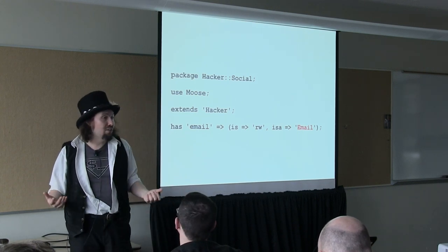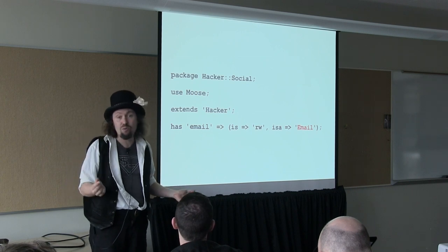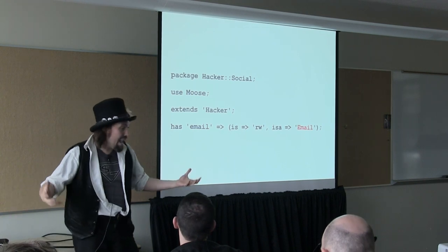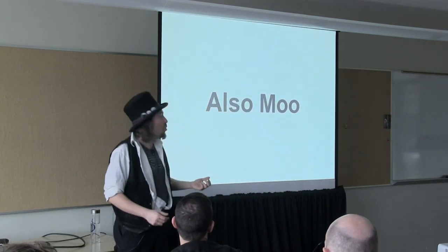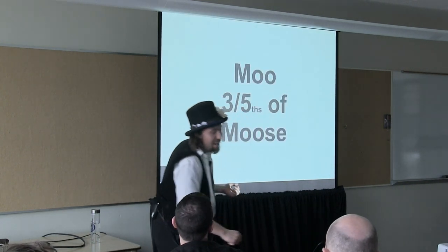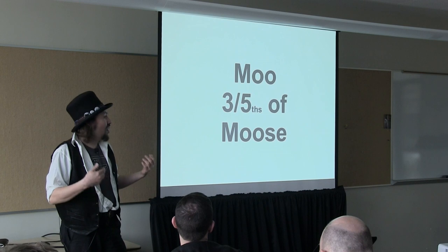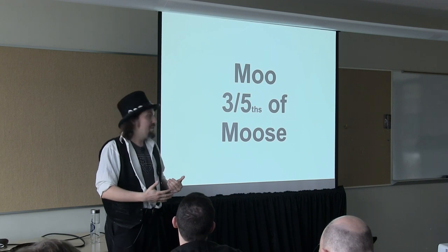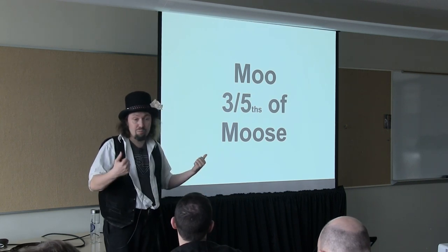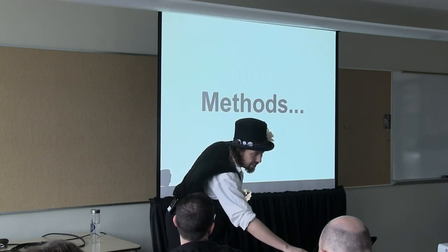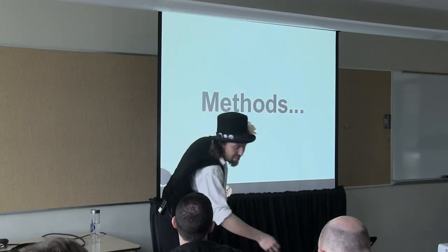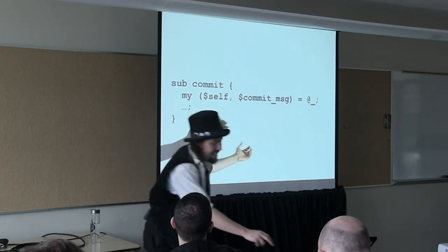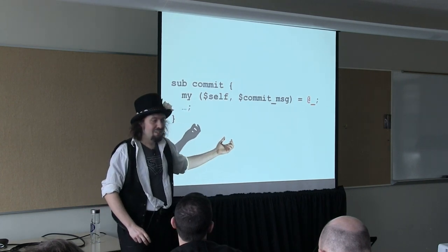Once I've defined the email type, I simply say has an email, is read-write, and it is of type email. Now if anything tries to set that to something which is not a valid email address, I get an exception — absolutely fantastic. If you've been working with Moose and find it a little heavyweight, there's a wonderful system called Moo. Moo gives you three-fifths of Moose. I do a lot of my development in Moo because it's very lightweight and has fewer dependencies, but it's also 100% compatible with Moose — if somebody loads it up into a Moose system, it all works just fine. Writing methods in Moose — we know how to write methods in Perl, we make a subroutine, and then we have this thing called @_.